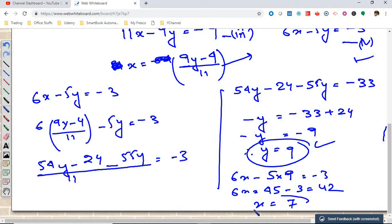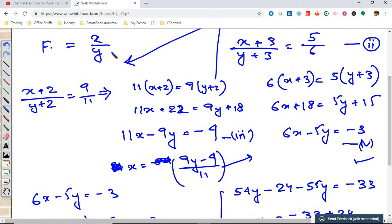So the value of x is 7 and the value of y is 9. That means the fraction is 7 by 9.